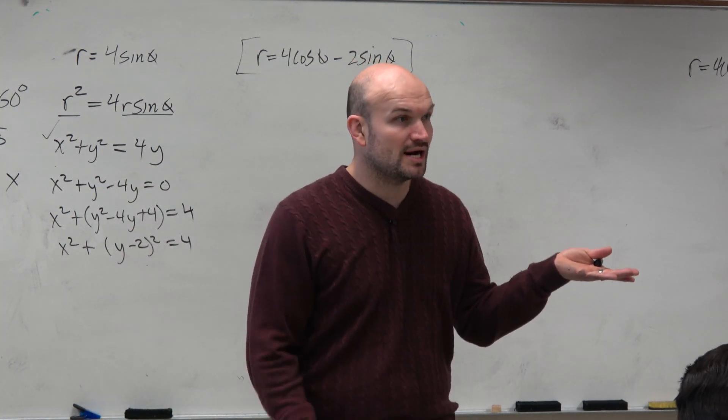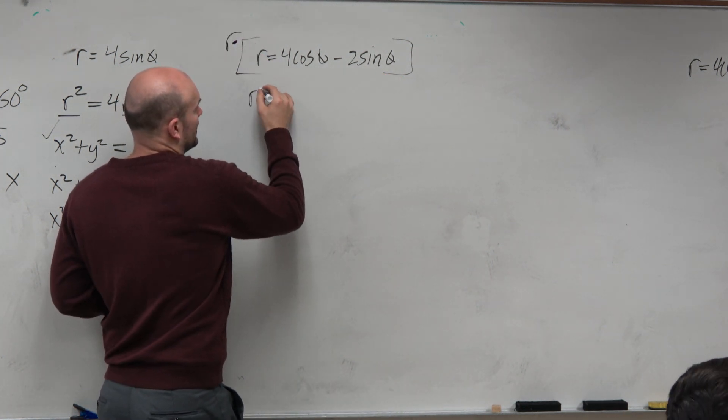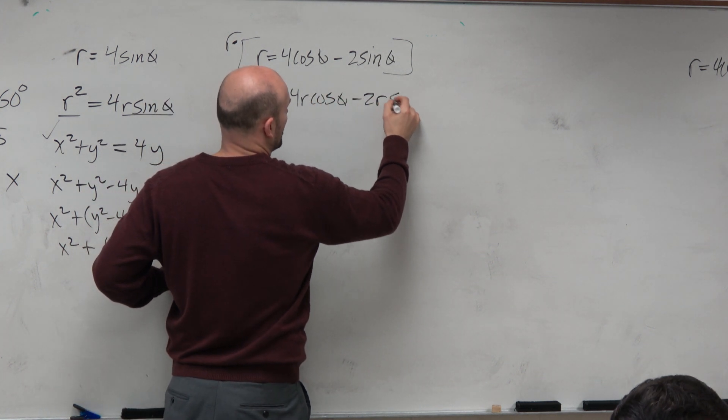And if we get an r squared, that's x squared plus y squared. So when I multiply everything times r, I get r squared equals 4r cosine of theta minus 2r sine of theta.